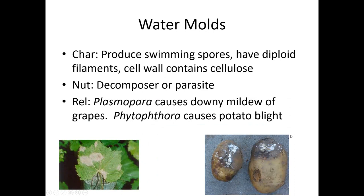Next up, water molds. The key to these guys is that when they release spores, the spores actually have flagella on them so they can swim around — this is why they do better in water, since flagella really don't work without water. The cell wall containing cellulose means it's kind of plant-like but also kind of fungus-like, and this is usually going to be a decomposer. Plasmopora infects grape leaves — you can see blotches where the leaf is dead. The more of a leaf that dies the less sugar the plant can make, and since you can't make good wines without sugar, a lot of vineyards are very concerned about Plasmopora.